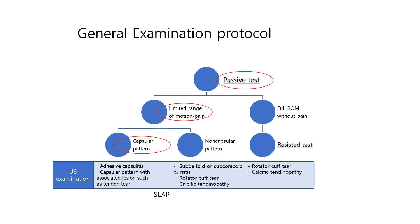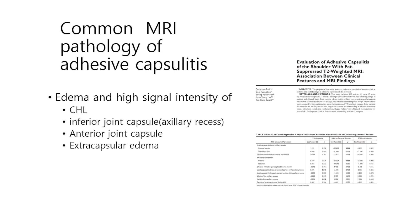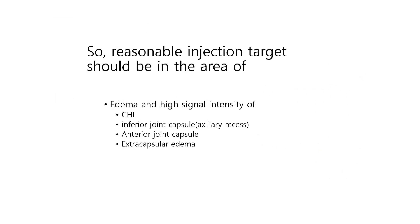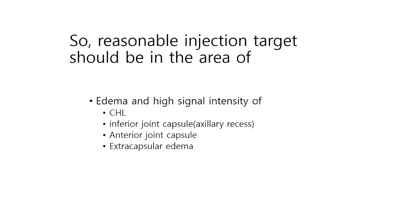Adhesive capsulitis is the most common pathology. Even when we presume frozen shoulder, we don't always know the exact area of pathology. The common MRI pathology findings of adhesive capsulitis show edema and high signal intensity found in many regions of the anterior and inferior capsule.